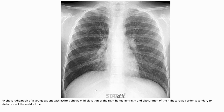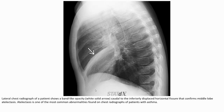This PA chest radiograph of a young patient with asthma shows mildly elevated right hemidiaphragm and obscuration of the right heart border secondary to atelectasis of the middle lobe. On the lateral chest radiograph of the same patient, we can see a band-like opacity corresponding to inferior displacement of the horizontal fissure, confirming right middle lobe atelectasis. Atelectasis is one of the most common abnormalities found in the radiograph of patients with asthma.